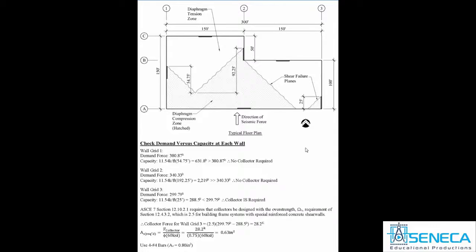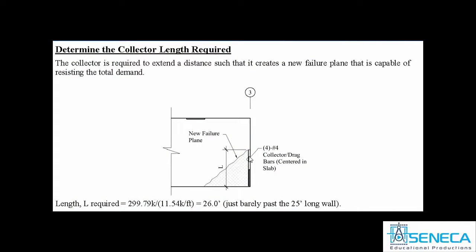We're adding the four number 4 bars. The best way to think about this: the first failure plane did not have enough shear capacity, so we added shear capacity — that's what those four number 4s are. They provide added shear capacity crossing the first failure plane, giving us enough total shear capacity to resist the load. Now, where do we stop this? By extending it, we create a second shear plane, wherever it ends — that becomes the next critical check. At that point, the diaphragm shear capacity works by itself but has a longer effective depth. The total shear plane length required is about 26 feet based on 11.54 kips per foot.